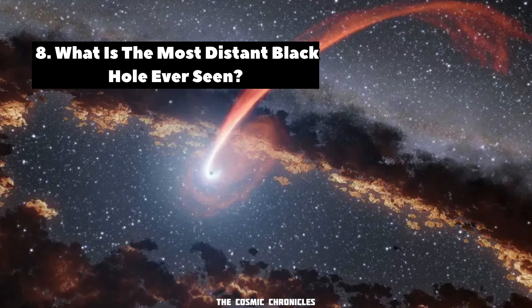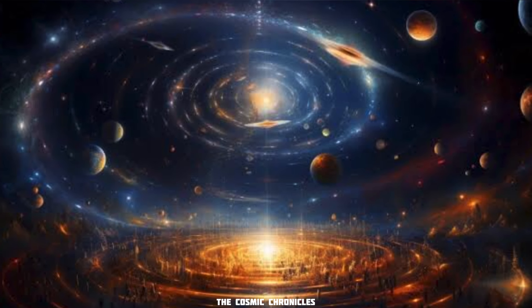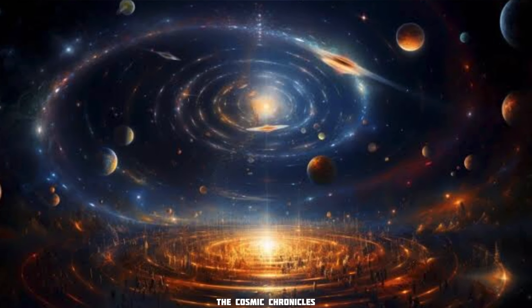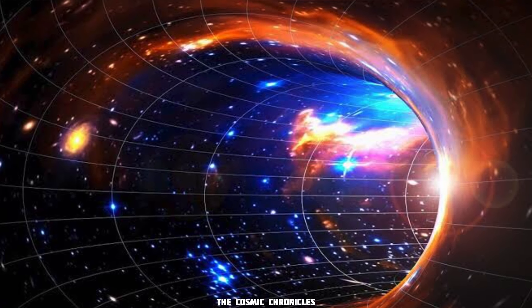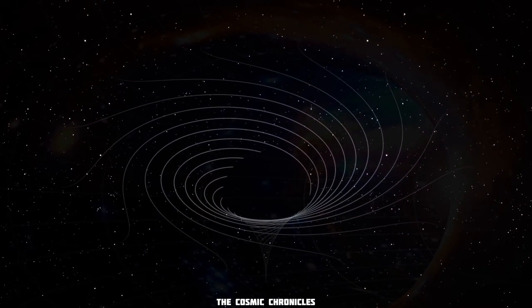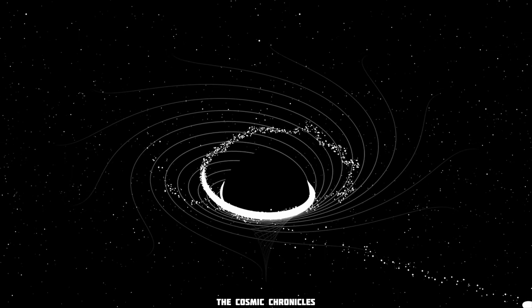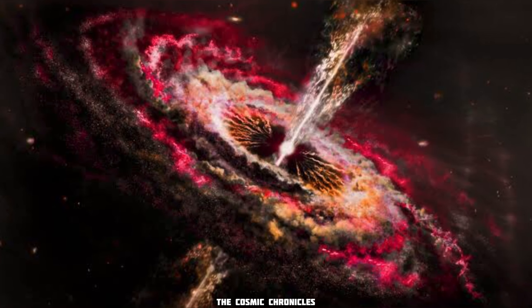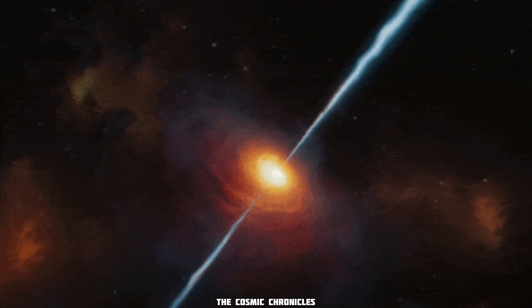The most distant black hole ever detected is located in a galaxy about 13.1 billion light-years from Earth. The age of the universe is currently estimated to be about 13.8 billion years, so this means this black hole existed about 690 million years after the Big Bang. This supermassive black hole is what astronomers call a quasar, where large quantities of gas are pouring into the black hole so rapidly that the energy output is a thousand times greater than that of the galaxy itself. Its extreme brightness is how astronomers can detect it at such great distances.